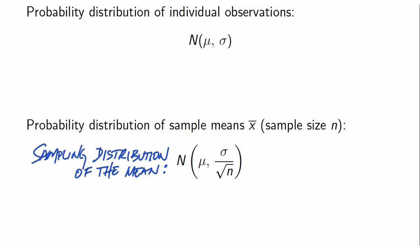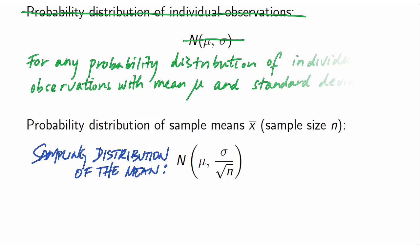We can't be sure that individual observations behave like observations from a normal distribution — they could come from a uniform distribution, a skewed distribution, or anything else. But as long as our sample size is large enough, we have the central limit theorem working for us. It tells us that the probability distribution of the means is approximately normal.